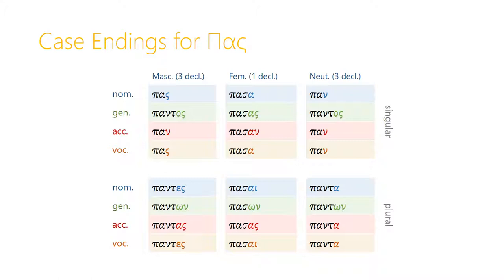Pas is a little bit irregular in the accusative singular, though fairly easy to remember. The accusative singular for masculine uses nu instead of the alpha ending, and uses the shortened stem that we saw in the nominative. So it's: nominative pas, genitive pantos, accusative pan, and pas for the vocative. The feminine first declension accusative ending is totally regular: passan. And the neuter accusative singular is the same as the nominative singular: pan. That means the accusative singular of the masculine and neuter forms are both pan. In the plural, things become perfectly regular: pantas for the masculine, passas for the feminine, and panta for the neuter — which again is the same as the nominative plural form.